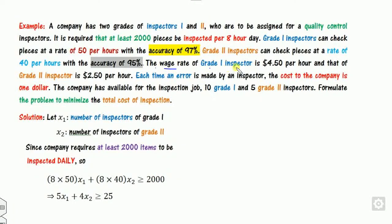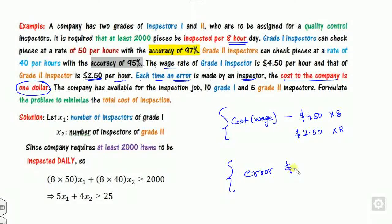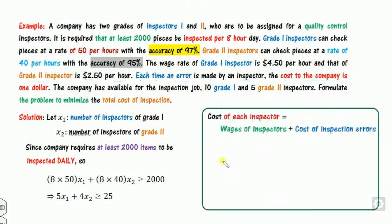The wage rate of grade 1 is $4.50 per hour and $2.50 per hour for grade 2. They work 8 hours, so we calculate total wage cost. Also, each error made by an inspector costs the company $1. So there are two cost components: the wages and the error cost, and the total cost is the sum of both.